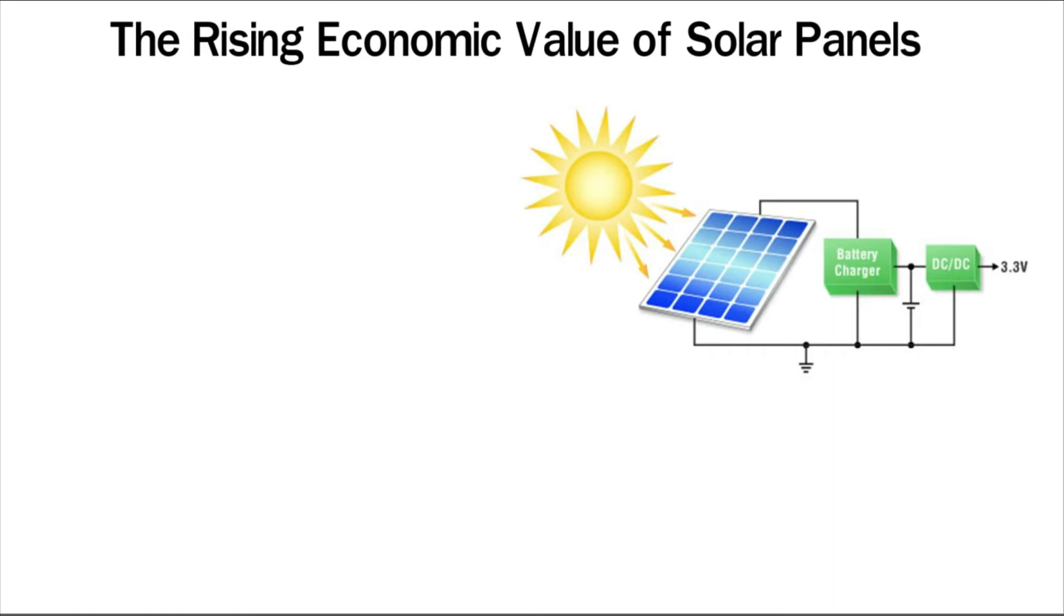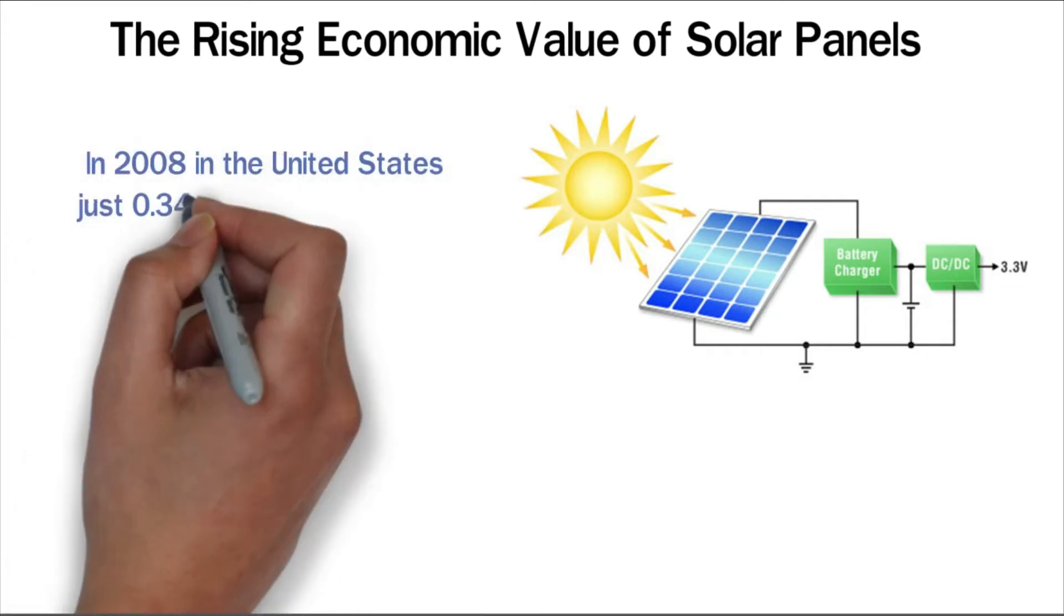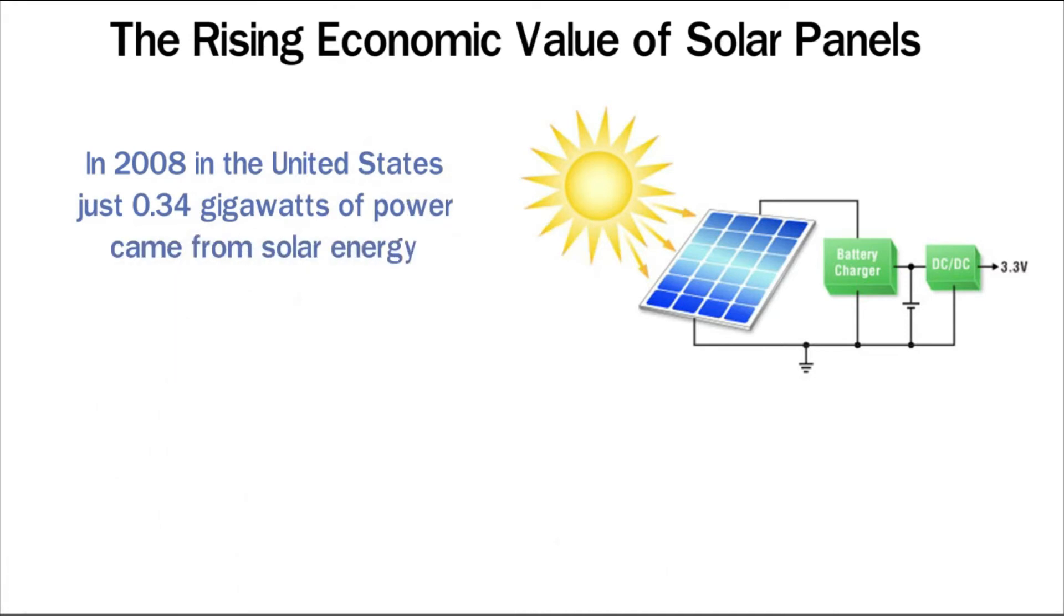Thus there are a large amount of new solar systems worldwide. Overall, solar power is viewed as a sustainable way to make energy. In 2008, in the United States, just 0.34 gigawatts of power came from solar energy. This number is growing.